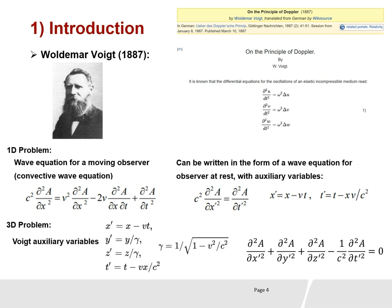In his paper on the principle of Doppler, Voigt used the wave equation for light or for sound. If the wave is sound, A is the longitudinal pressure and C is the speed of sound. If it is for light, A is the transverse light component and C is the speed of light.